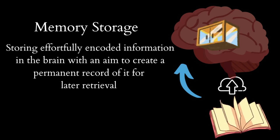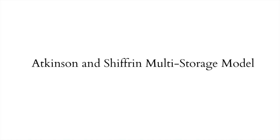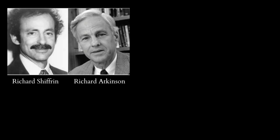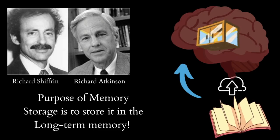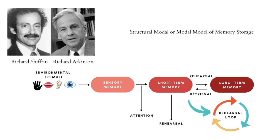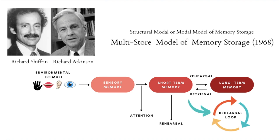Now let's understand the stages of memory storage with the Atkinson and Shiffrin multi-store memory model. Richard Atkinson and Richard Shiffrin proposed that the purpose of memory storage is to store previously encoded information in order to supply us with that information at a later time. In 1968, they proposed the modal model of memory storage — referred to as the multi-store model — to explain how effortfully encoded information is stored in human memory.